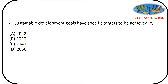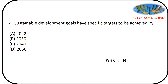Next question: Sustainable Development Goals have specific targets to be achieved by which year? There are 17 Sustainable Development Goals. Options: 2022, 2030, 2040, 2050. Answer is option B — 2030. The SDGs started in 2015 and should be achieved by 2030.